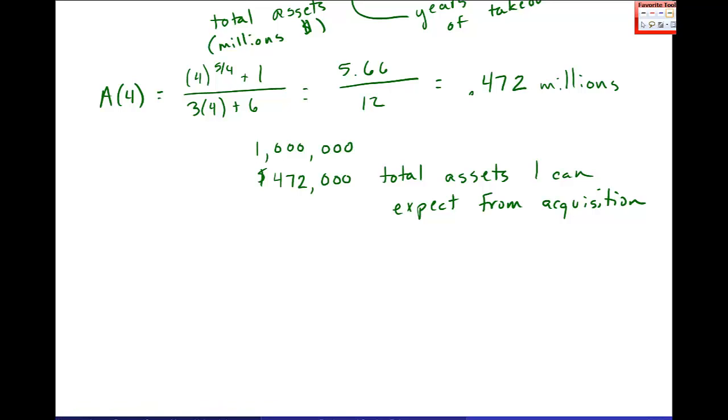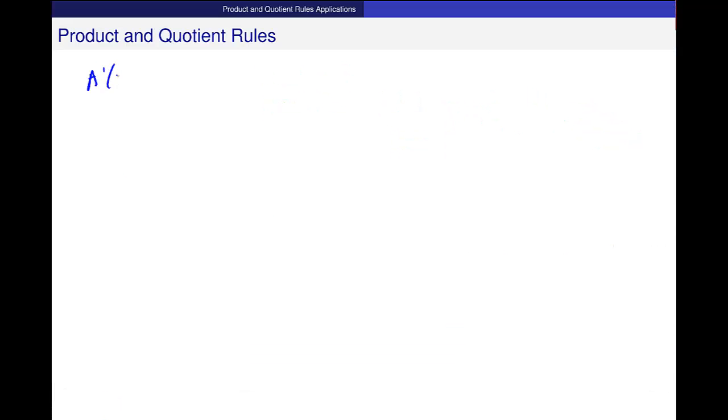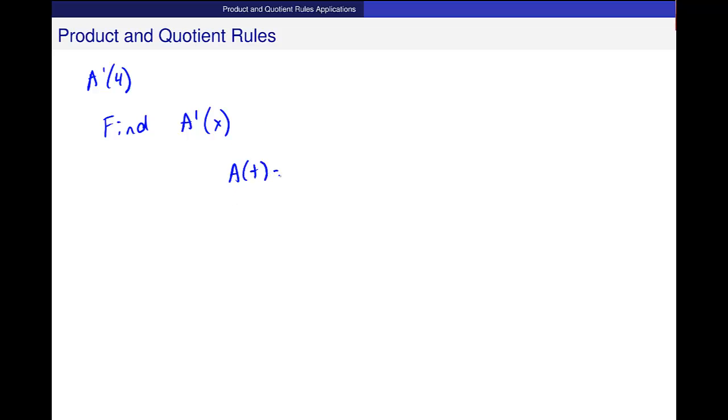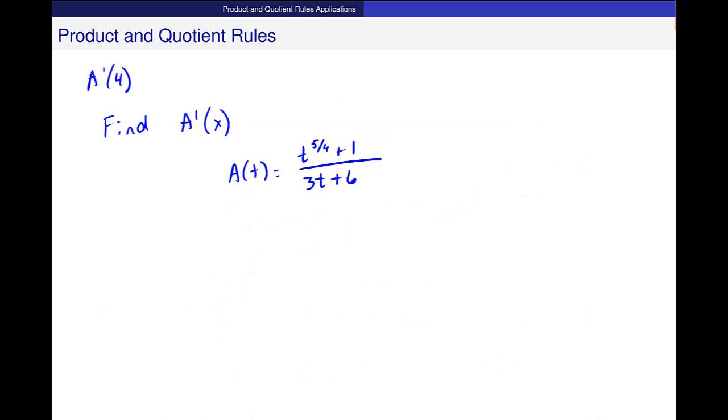Now I want to find A'(4). The first thing we need to do is find A'(x). Let me go back up and get this function. T to the 5/4 plus 1 over 3t plus 6. So here's A(t), t to the 5/4 plus 1 over 3t plus 6. Let me just check one more time. I don't want to do this with the wrong function.